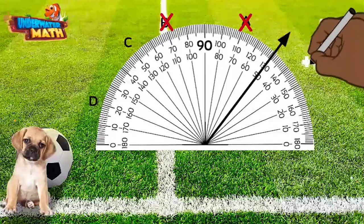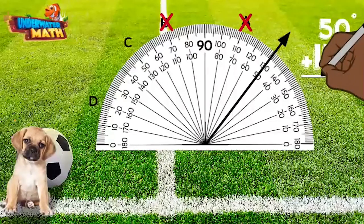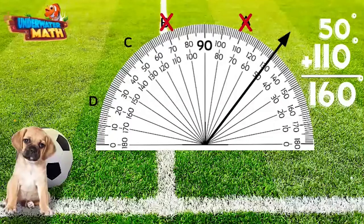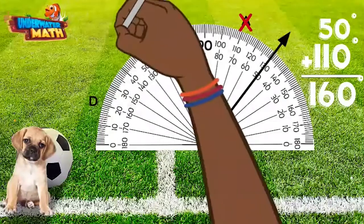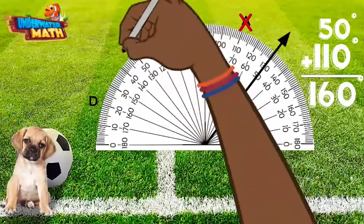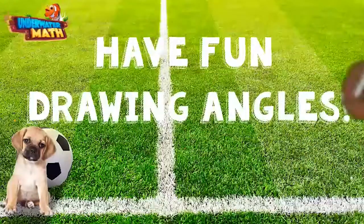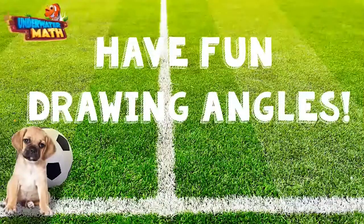50 degrees plus 110 degrees equals 160 degrees. Point C is at 130 degrees and is incorrect. Point D is at 160 degrees and will make our 110 degree angle. You are ready to draw angles on your own — have fun!